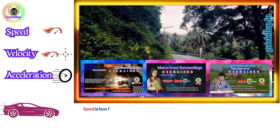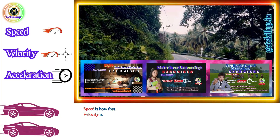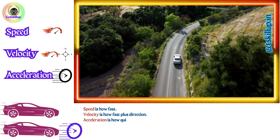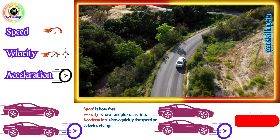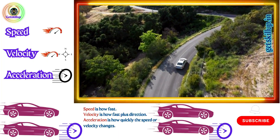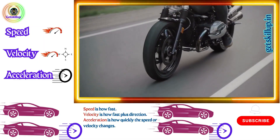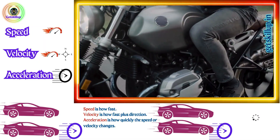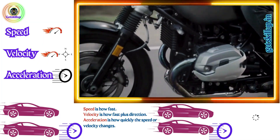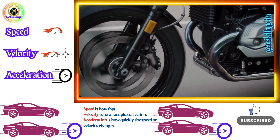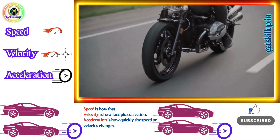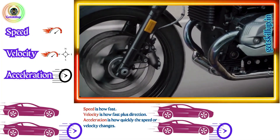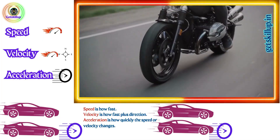Quick recap: speed is how fast; velocity is how fast plus direction; acceleration is how quickly the speed or velocity changes. Example summary: you are riding a bike at 20 km/h — that's your speed. You are riding at 20 km/h to the north — that's your velocity. You start riding faster from 20 km/h to 40 km/h in 10 seconds — that's acceleration.